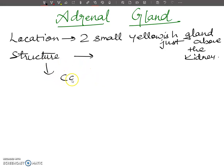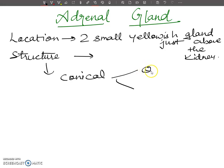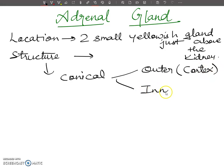Now I want to talk about the structure. Each adrenal gland is a conical gland and it is composed of two distinct regions. The first region is the outer region, which is called the cortex, and the inner region is called the adrenal medulla.